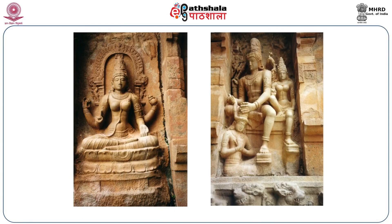One of the features of both Gangaikonda Cholapuram and the Brihadishvara temple at Tanjavur is the installation of huge sculptures within the Devakoshas. On the left side you can see one of the beautiful sculptures of Sarasvati, holding an Akshamala. On the right side you have Chandesha Anugraha Murthy — Dr. Nagaswami felt that this Chandesha Anugraha Murthy represents Rajendra I himself becoming Chandesha, seated under the legs of Shiva, and Shiva garlanding Rajendra I. This is one of the masterpieces of Gangaikonda Cholapuram.